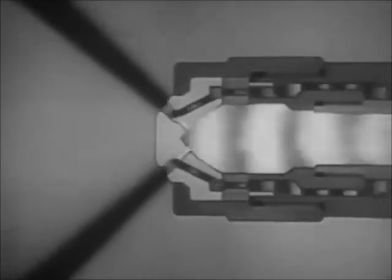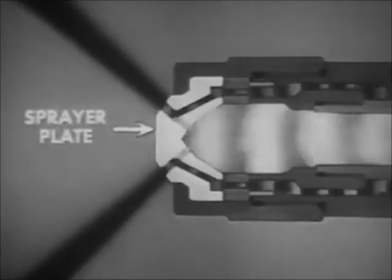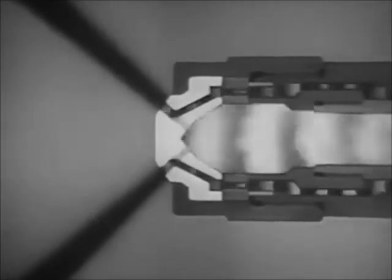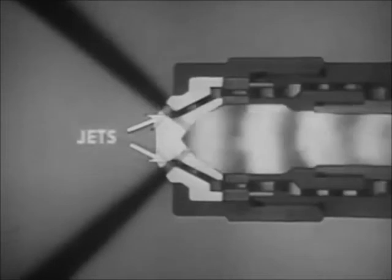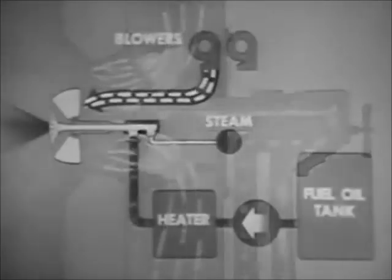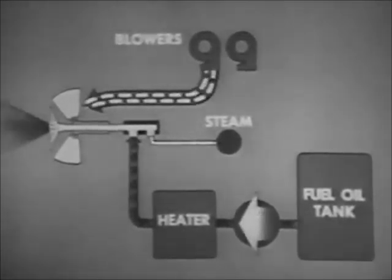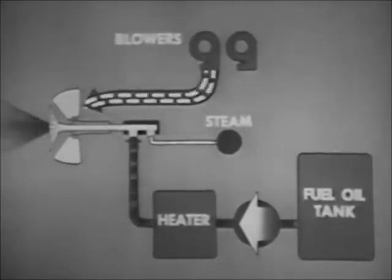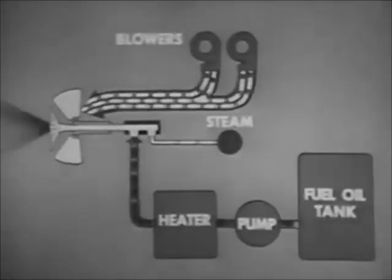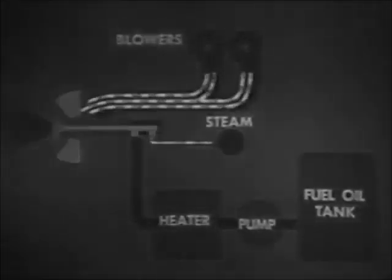In the steam atomizer, oil under low pressure is heated by the steam passing through the barrel and is atomized at the sprayer plate. The register gives the air from the blower a rotating motion and mixes the air with the oil. You regulate oil pressure to control the oil supply and vary steam pressure with oil pressure. You vary the speed and number of blowers to control the air supply.